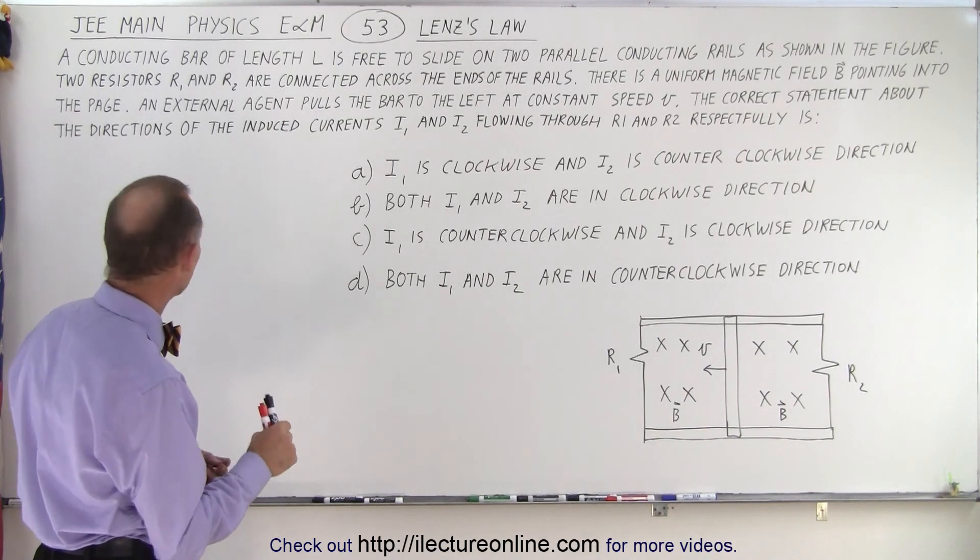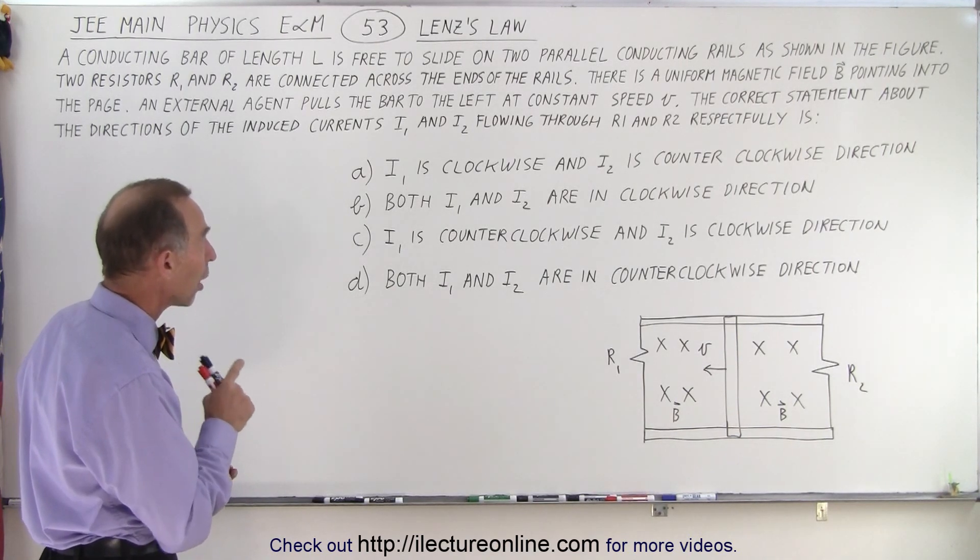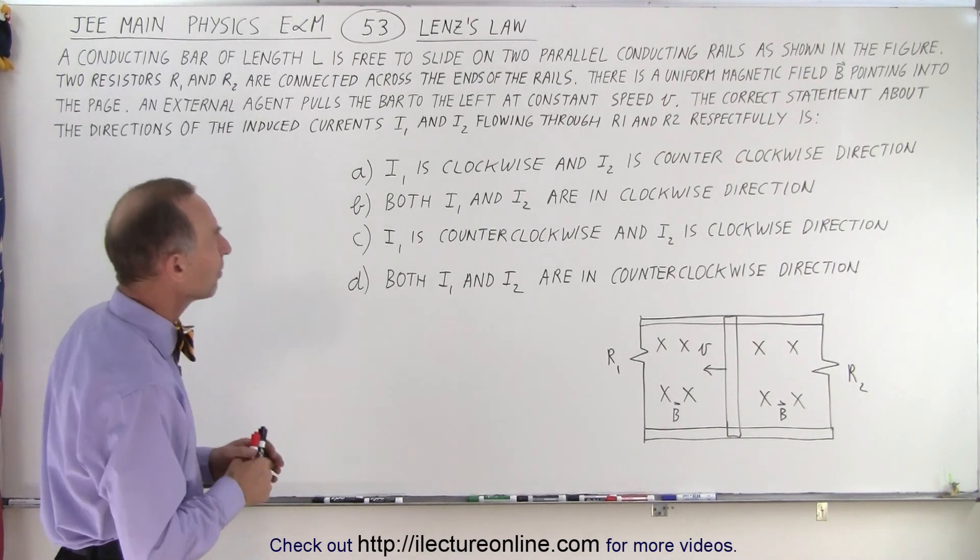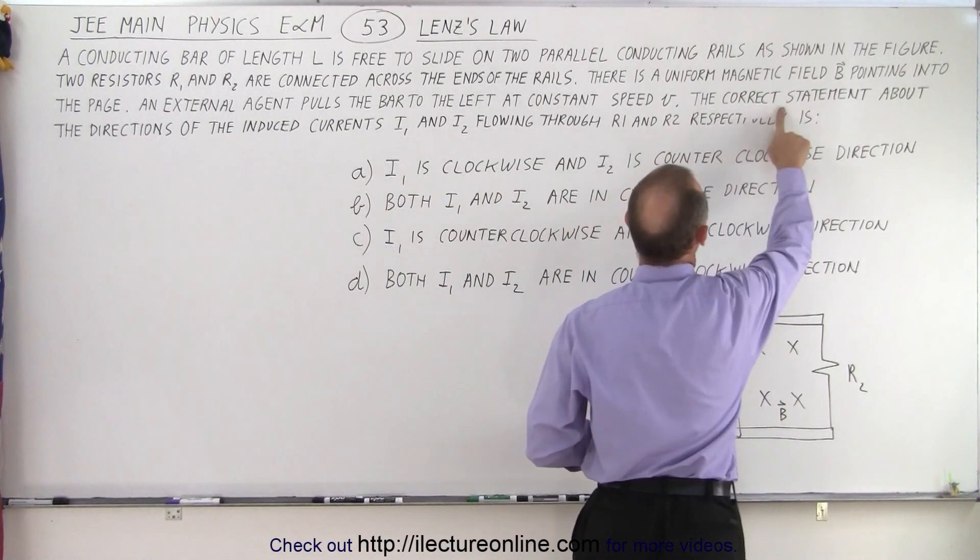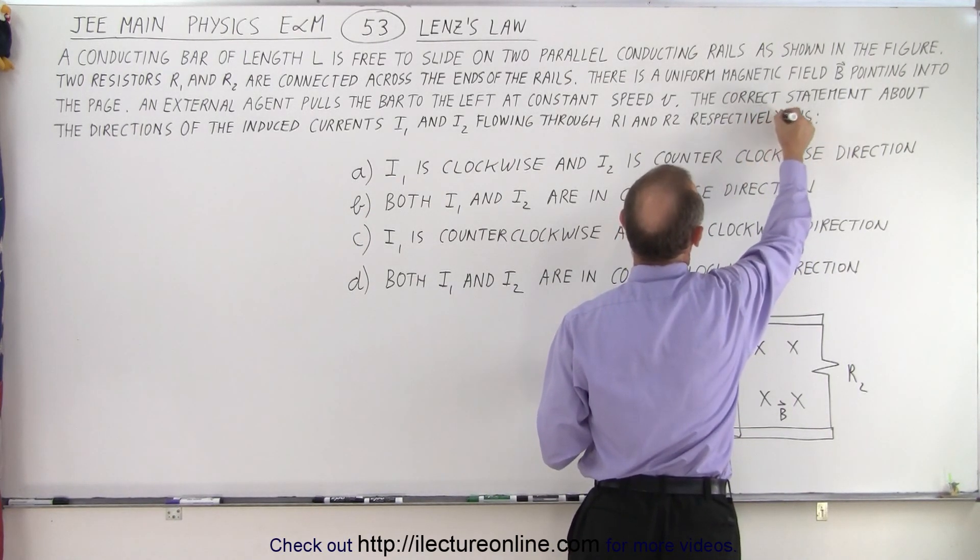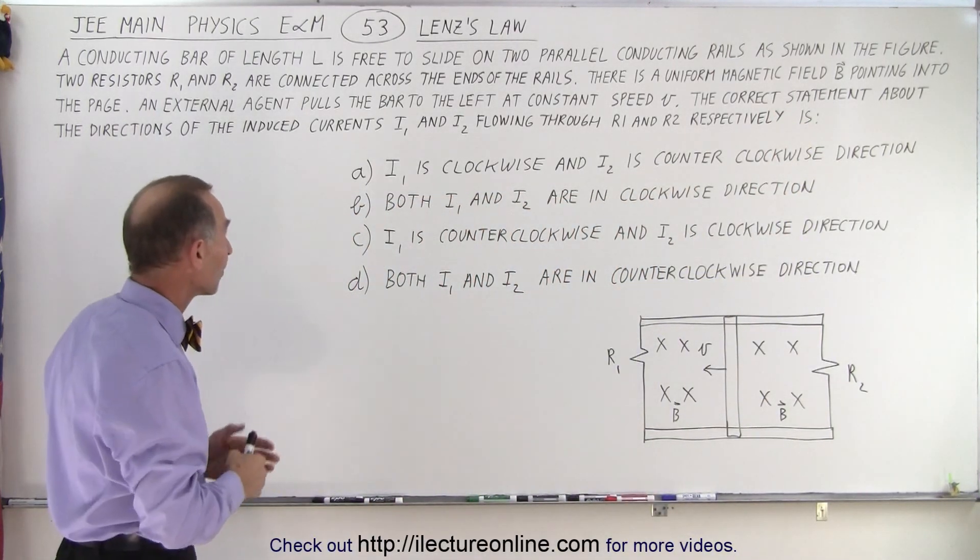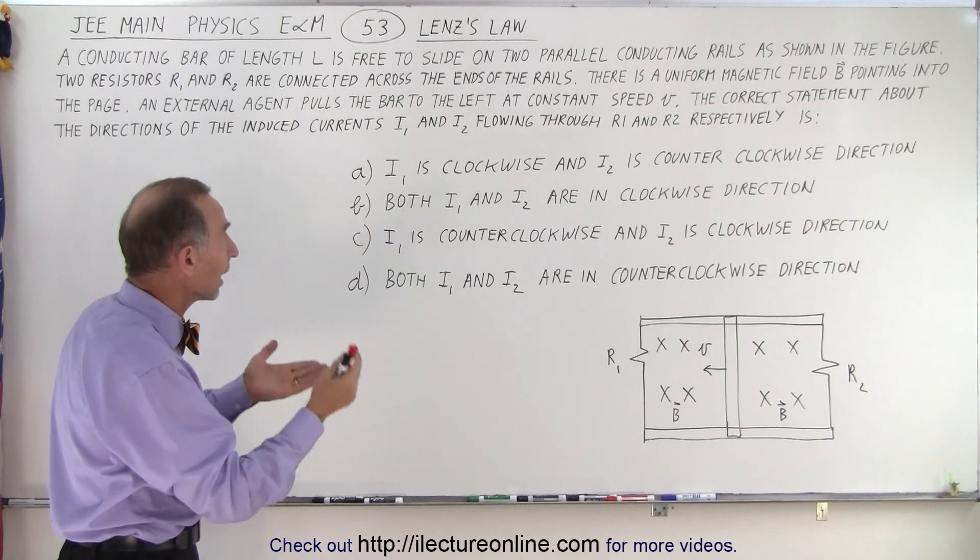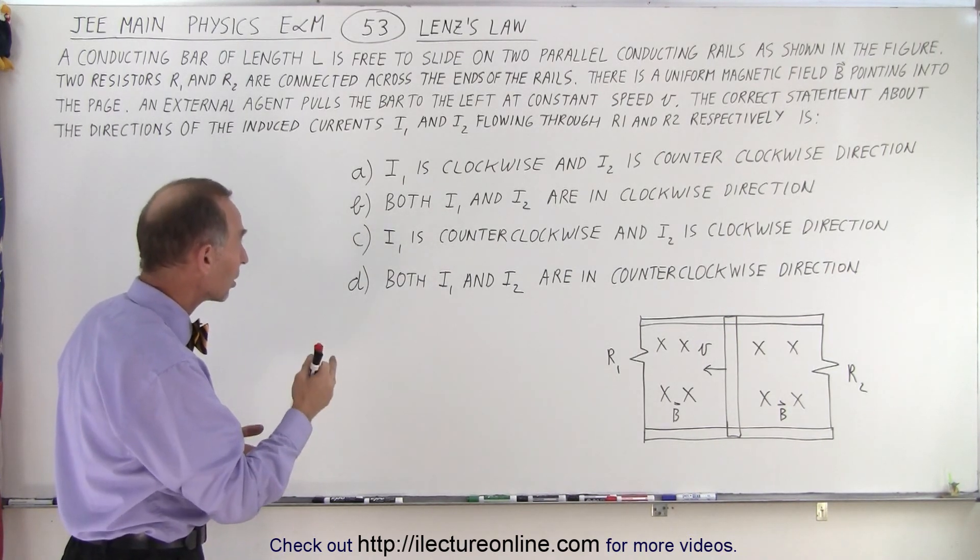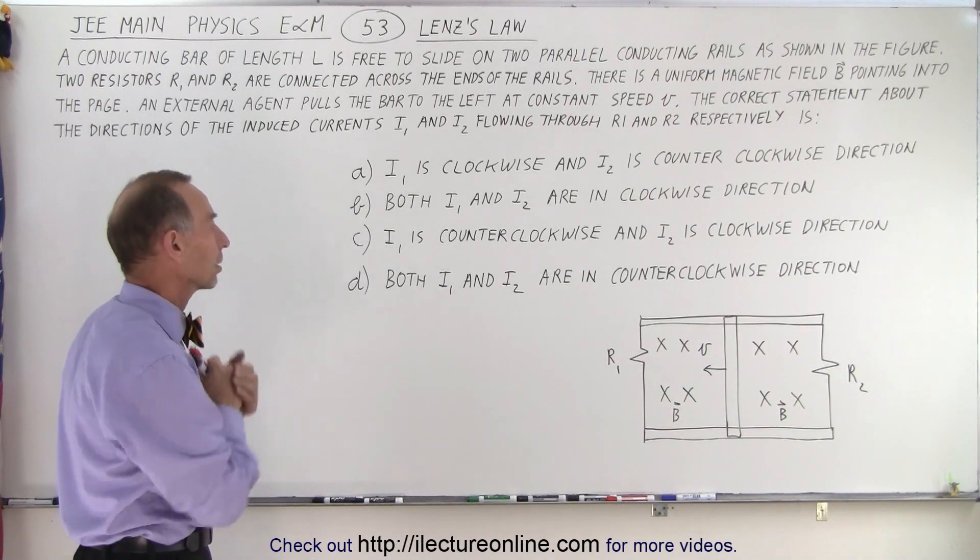The correct statement about the directions of the induced currents I1 and I2 flowing through R1 and R2 respectively is, and they give us four possible answers: I1 is clockwise while I2 is counterclockwise, both are clockwise, I1 is counterclockwise while I2 is clockwise, or both are counterclockwise.